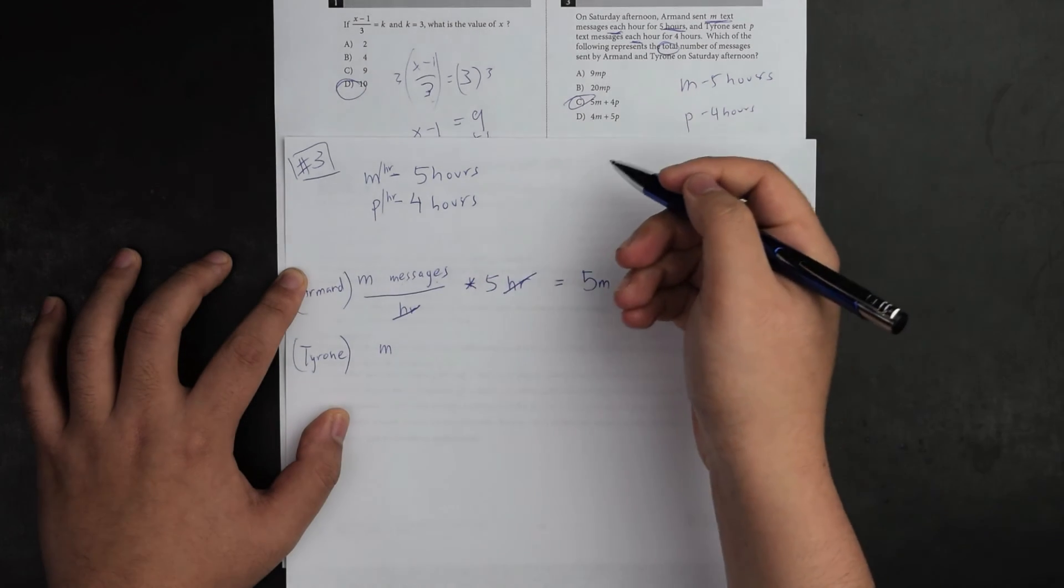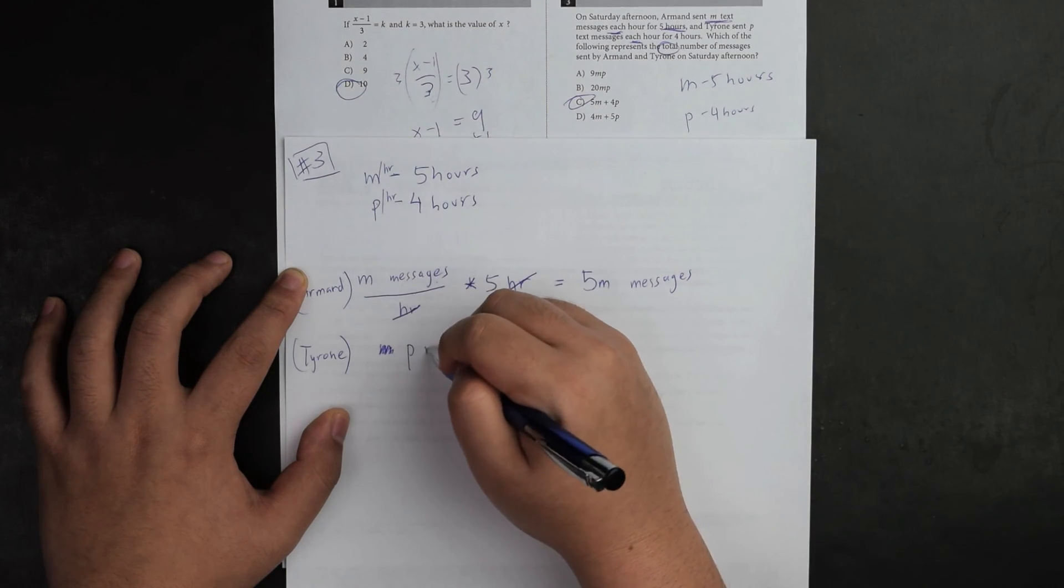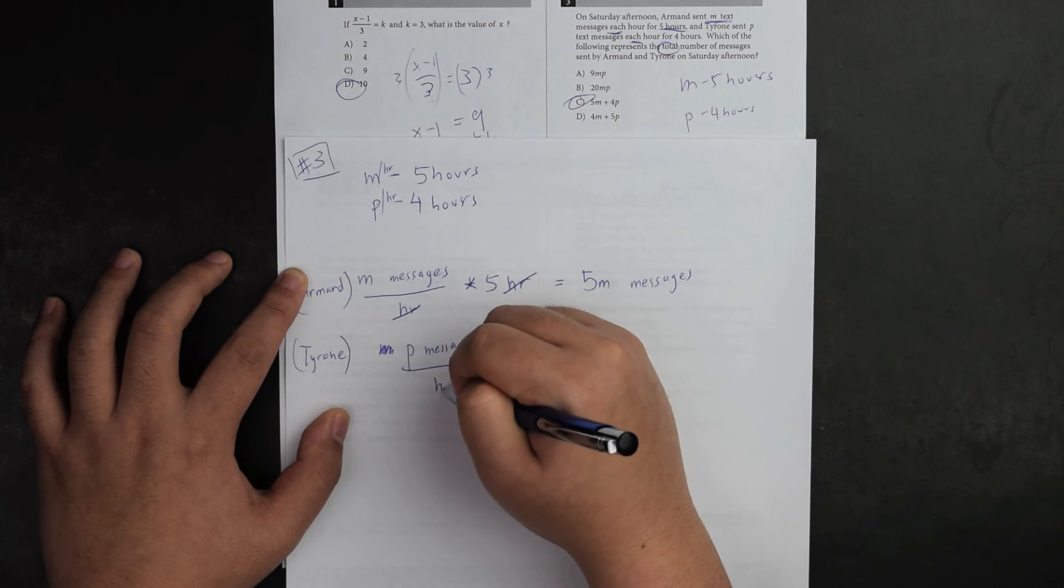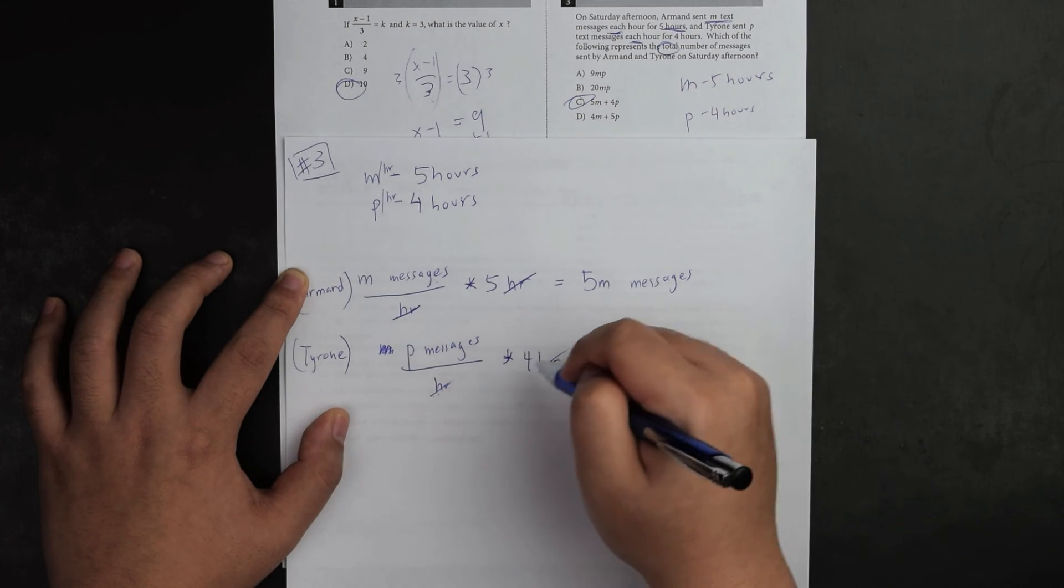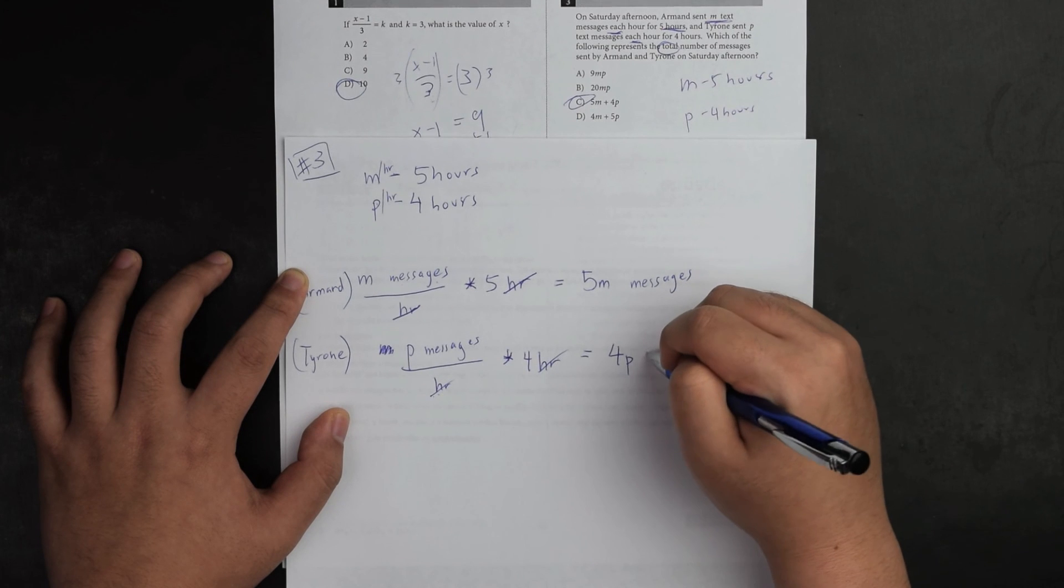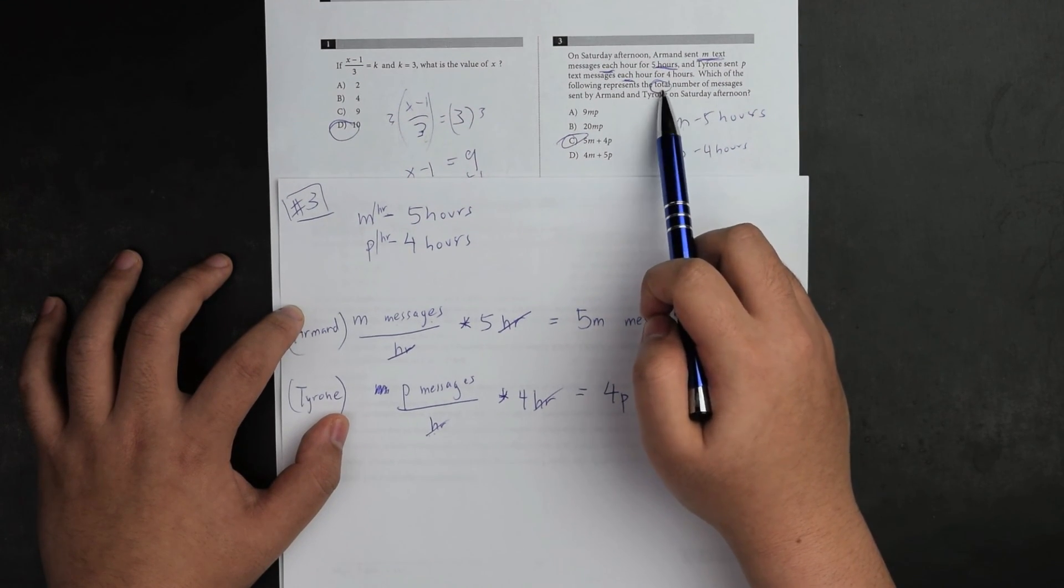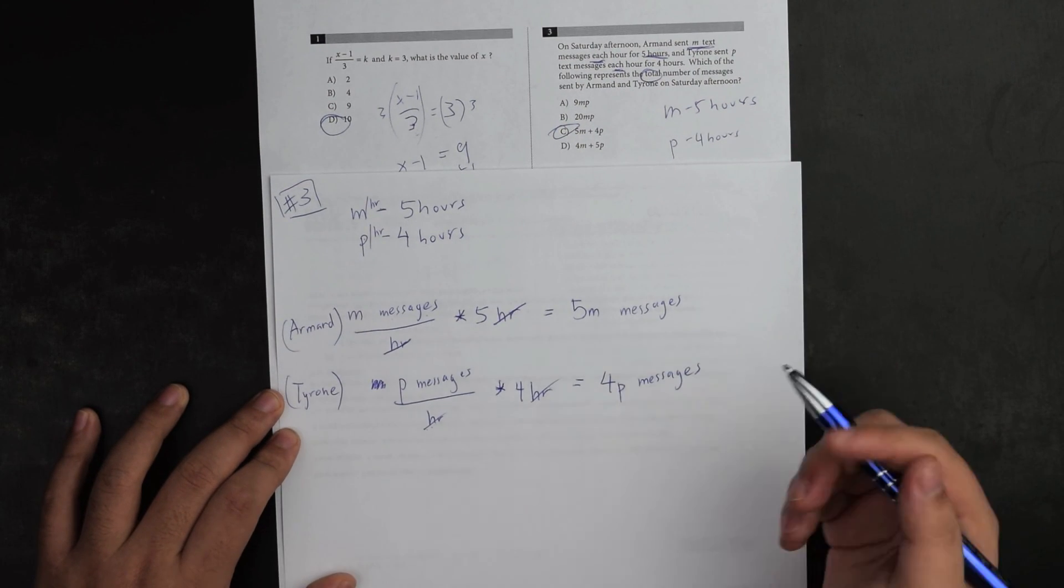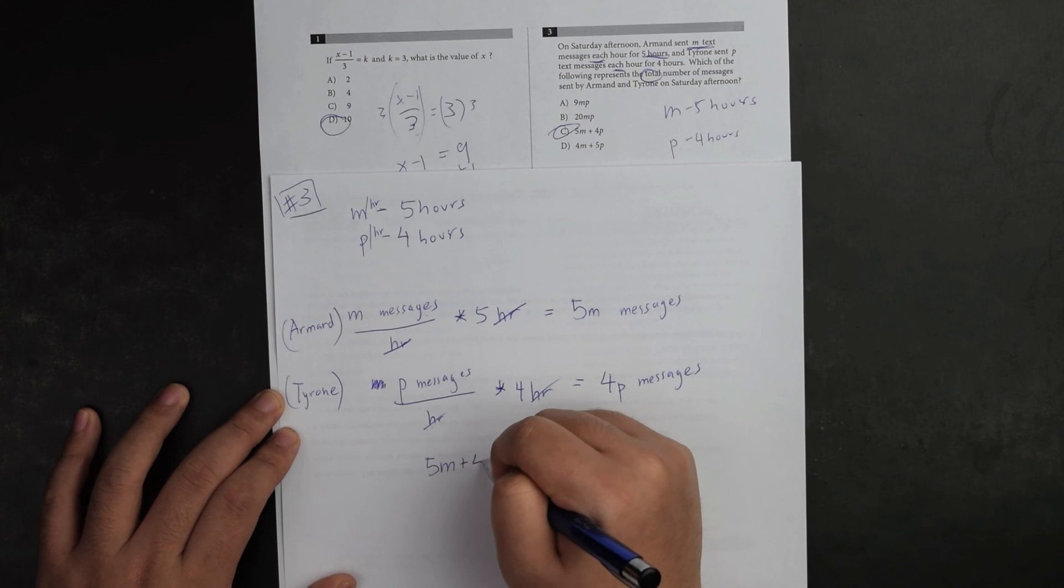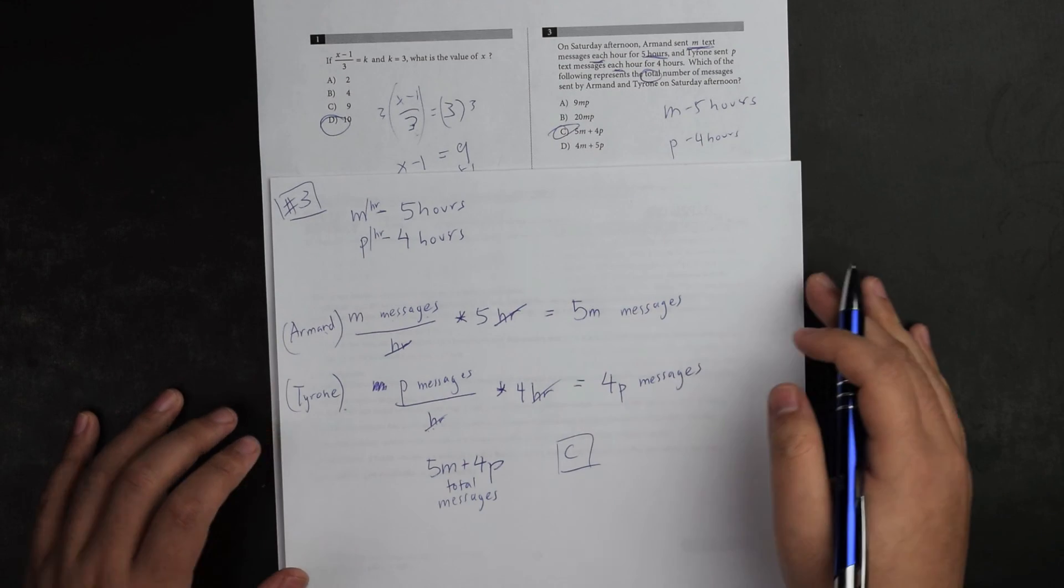For Tyrone, it's p messages per hour times four hours. Same concept, these cancel out through cross multiplication, and this becomes 4p messages. The important thing I noticed was the total hours that exist. When I have these totals, I need to combine them together. So 5m plus 4p is my answer C, which tells me how many total messages Armand and Tyrone sent. That concludes the video.